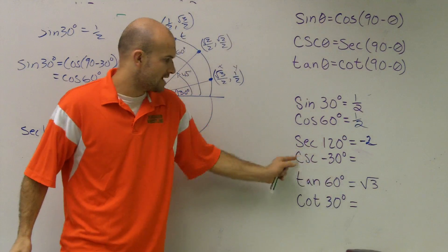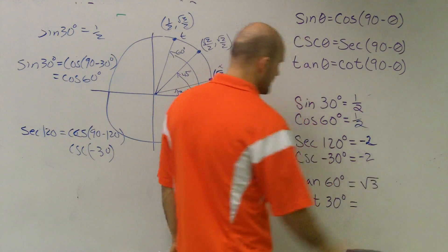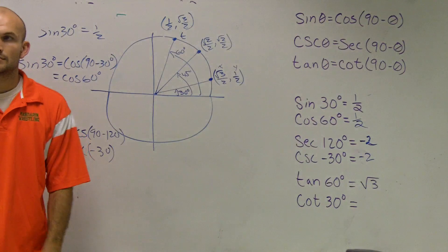Negative 2. So, you guys see how cosecant of negative 30 is also going to be negative 2? You ever see that?